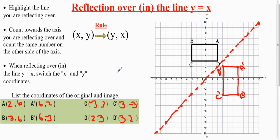And that is a reflection over the line y equals x. Pick the method you're most comfortable with — I like the rule, and I can remember it. If you get confused with all the transformation rules, don't use the rule — just count towards the reflection line. If reflecting over the y-axis, count towards y; over the x-axis, count towards x; over y equals x, draw that line and count towards it, then the same amount the other way. That's the video.